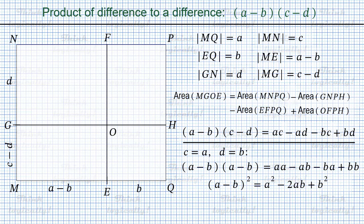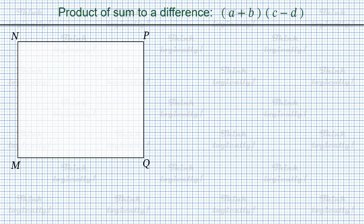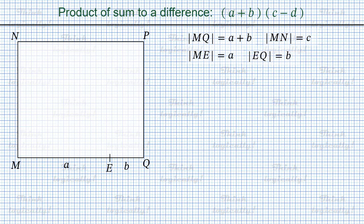And one more identity of this type: the sum of two numbers multiplied by a difference of two numbers — a plus b times c minus d. A mixture of the two previously considered identities, and the drawing for this identity also represents a mixture. This time, in rectangle MNPQ, side MQ has length a plus b, while the length of side MN is just c. On side MQ, we draw segment ME having length a, so the length of segment EQ is b. And again, we draw segment EF parallel to the sides, where point F lies on NP.